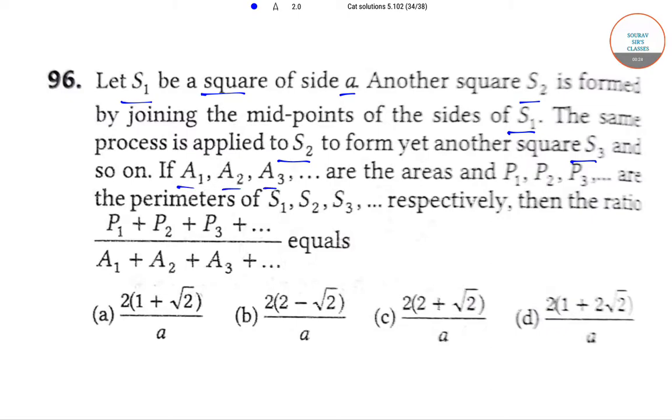Now if A1, A2, A3 are the areas and P1, P2, P3 are the perimeters of S1, S2, S3 respectively,